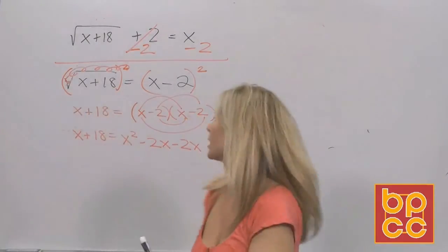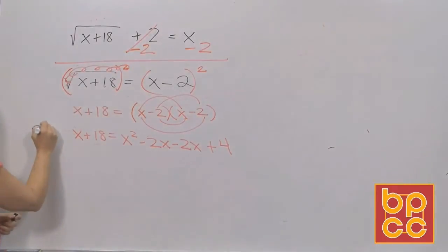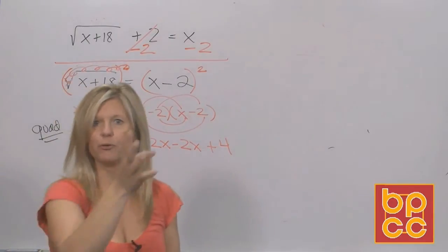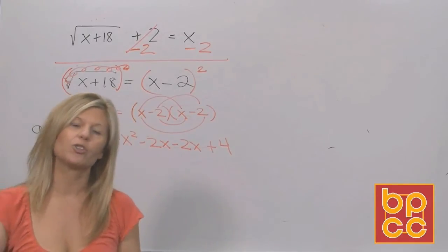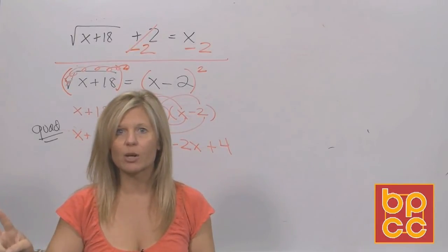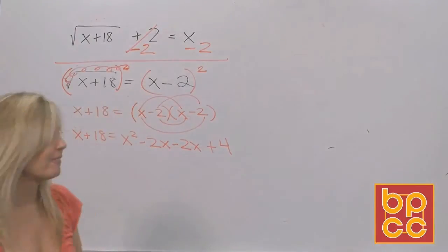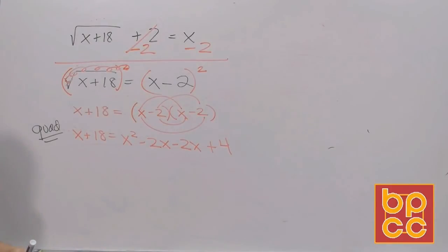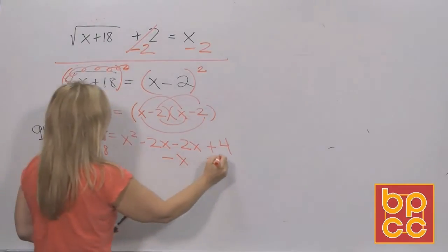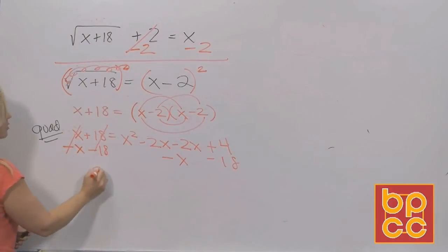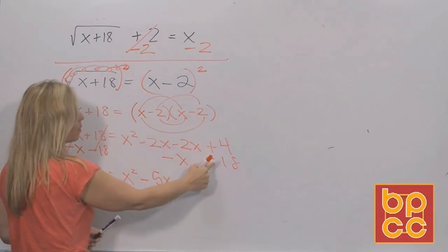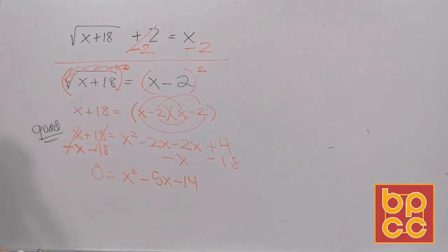You have four decisions: set equal to zero and factor, move terms and square root, complete the square, or use the formula. I always try the easiest way — factoring. To factor, the equation has to be set equal to zero. So we move the x by subtracting and move the 18 by subtracting, putting all like terms together. Negative 2x and negative 2x and negative x gives negative 5x, and 4 minus 18 is negative 14. So we get x squared minus 5x minus 14 equals zero.